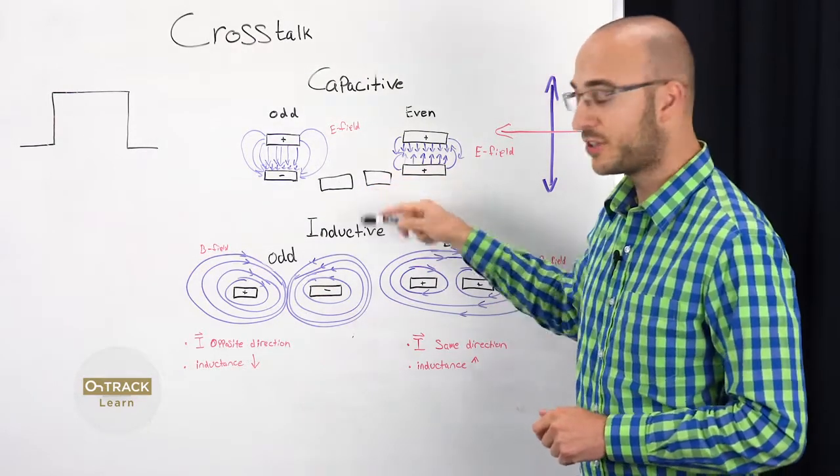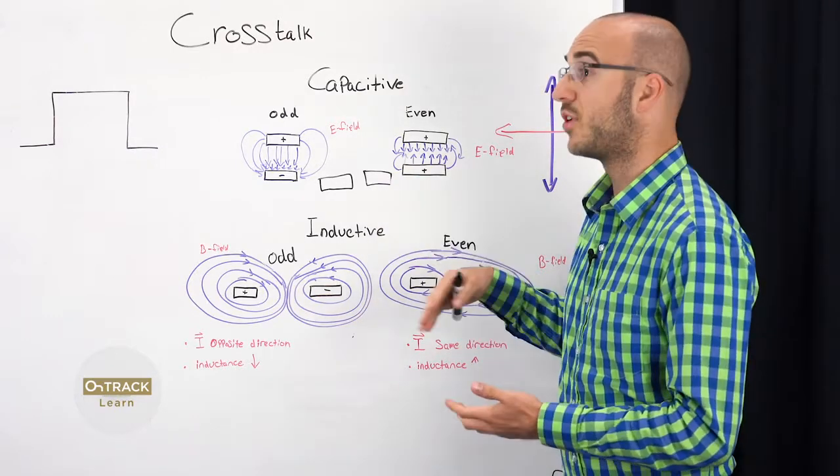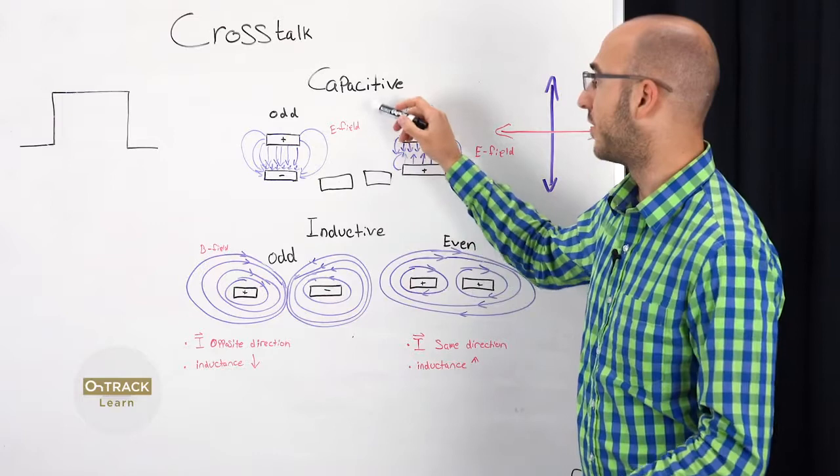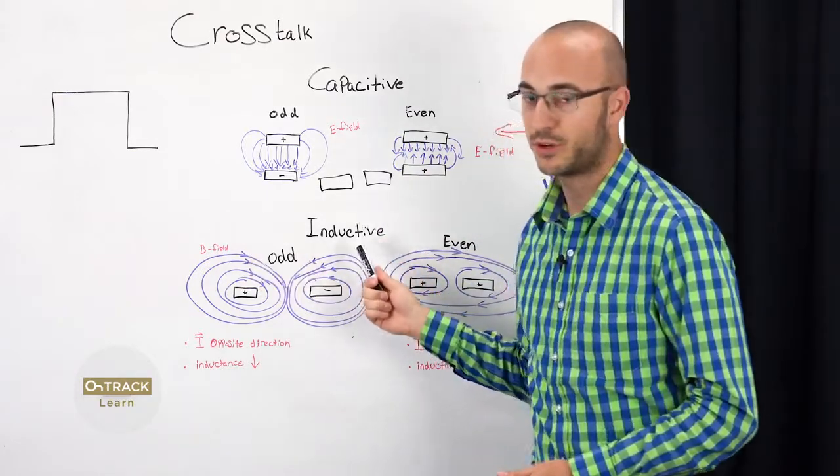You can also have capacitive crosstalk on the same layer if they're next to each other. But when you're in this configuration, inductive crosstalk will overpower, overshadow the effects of capacitive crosstalk. So you don't really need to worry about it. This is what you need to worry about at that time.